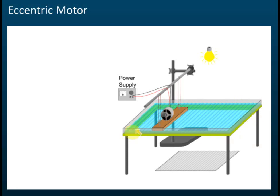This is a ripple tank. The tank has a transparent base — the bottom is actually a piece of glass. We fill it with some water. At the side of the tank, there is a sponge. We also have these things called dippers — a dipper can be a piece of wood or a spherical bob.